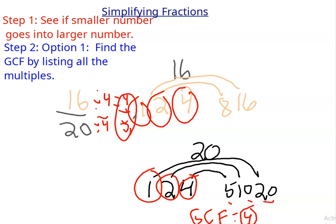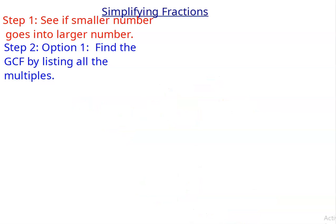So that way will work every time. Why don't we do one more? Why don't you try it? Let's simplify the fraction 12 over 18. So why don't you pause the video, make a factor rainbow for both, and find your GCF.